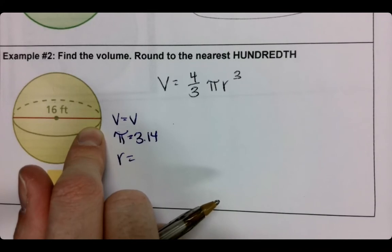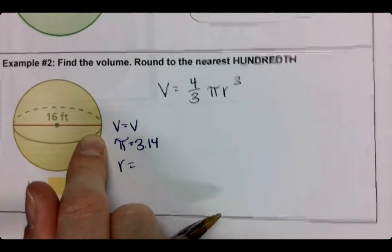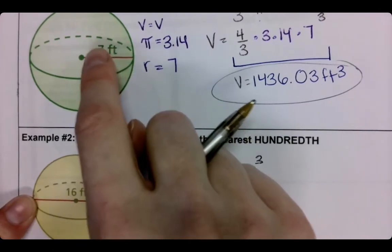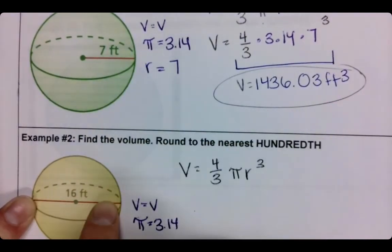R is 16. Is that our radius? No, and if you thought it was, remember, 7 was your radius. 7 and 16 don't look the same. This is halfway across. That's all the way across.